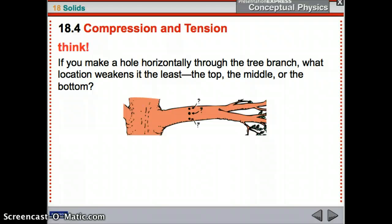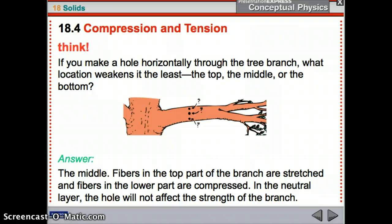Alright, so let's think. Tree branch. You could make a hole at the top, middle, or bottom of it. Which one would weaken it the least? The answer is the middle, right? The neutral layer. So if you put it in the top, it'll break from the top. If you put it in the bottom, it'll crush in at the bottom. But if you put it in the middle, nothing's being stretched or compressed there. So it will weaken it the least.